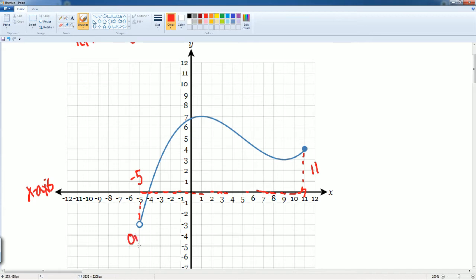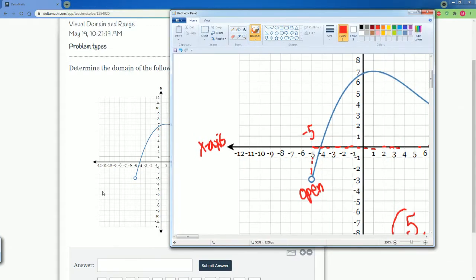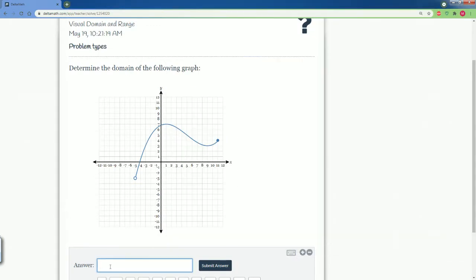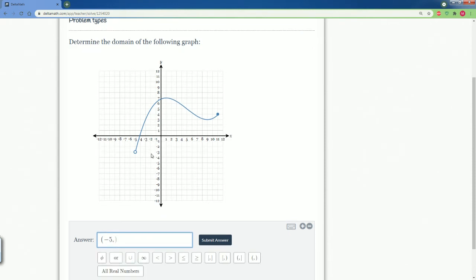So this means it's open because it's a circle. And here, it's closed. So your interval for the domain would be from negative 5 comma 11. It is open, so it's a parenthesis. It's closed on 11, so it's a bracket. So that's how the answer should look like. Open at negative 5 comma 11 and close it at the bracket.